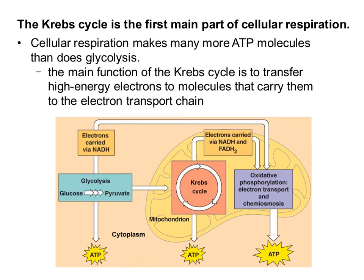So the net gain of ATP molecules is just two. In glycolysis we saw just a small amount of ATP being made, we saw our two pyruvate molecules being made, and we also saw NADH getting made full of electrons — and it's going to head to the last step.